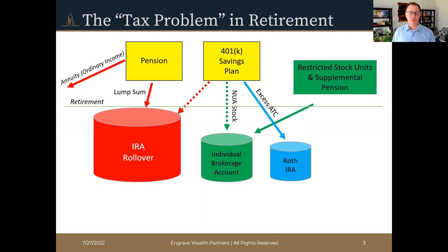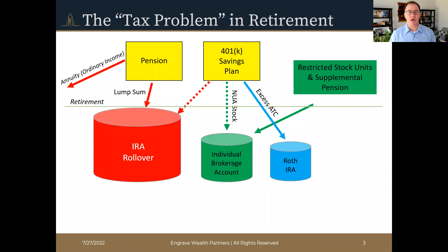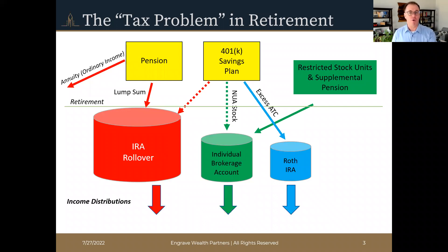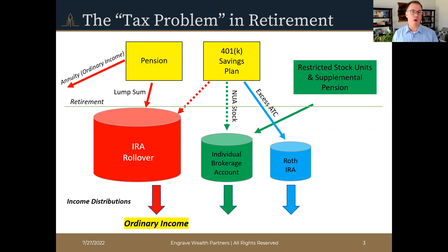So now we've retired and our monies are split between potentially three different accounts: the IRA, the brokerage account, and the Roth IRA. The color coding helps denote the tax implications of taking money from each account. If we choose to take your retirement income from an IRA, the entire distribution — however much you need — is going to be taxed as ordinary income, the same type of income as salary and wages, applied to the marginal bracket system: the more you take, the more taxes you'll pay. Any distribution from an IRA is ordinary income. Even qualified dividends from investments held inside an IRA don't get preferential treatment — any investment in an IRA is subject to ordinary income rules. That's what makes the IRA the least tax-friendly investment for retirement income.